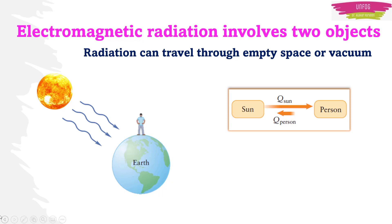Electromagnetic radiation from the sun is absorbed by a person on the earth. The person also emits radiation. So, there is a flow of energy in both directions from the sun to the person and from the person to the sun.